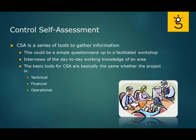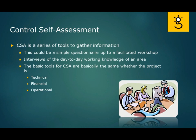The CSA — the control self-assessment — is a collection of tools used to gather information. It could be something as simple as a questionnaire, up to a fully facilitated workshop where you're having a group discussion with the people involved in the day-to-day operations of these controls. It also includes ongoing interviews about how it's working day-to-day based on people's knowledge of the area. The basic tools for CSA are the same whether the project is a technical one, a financial one, or an operational one.